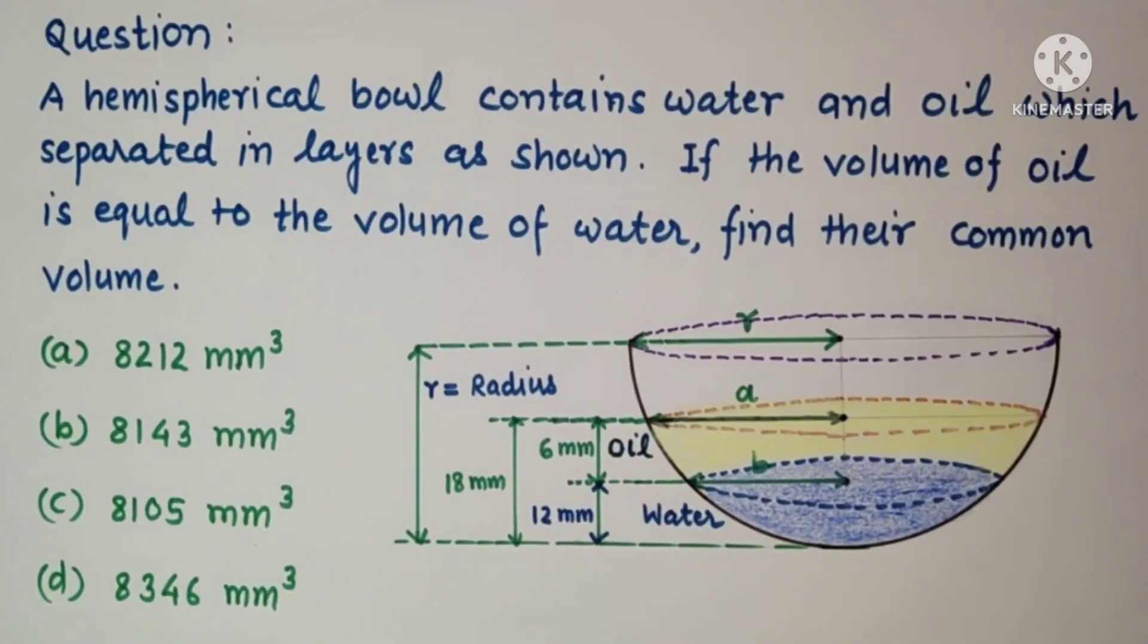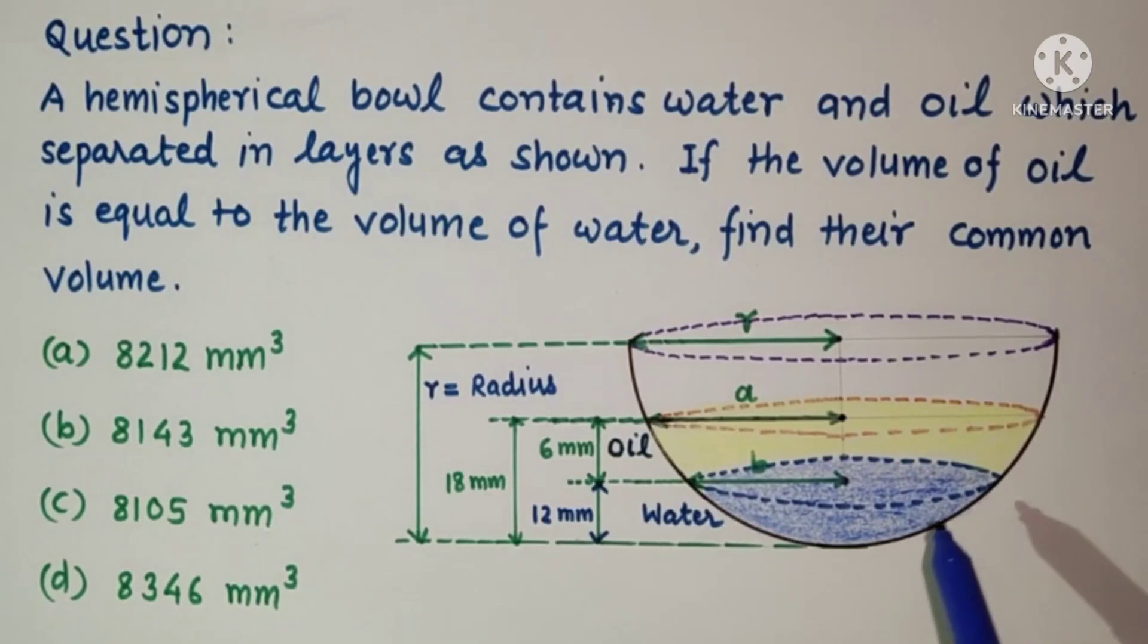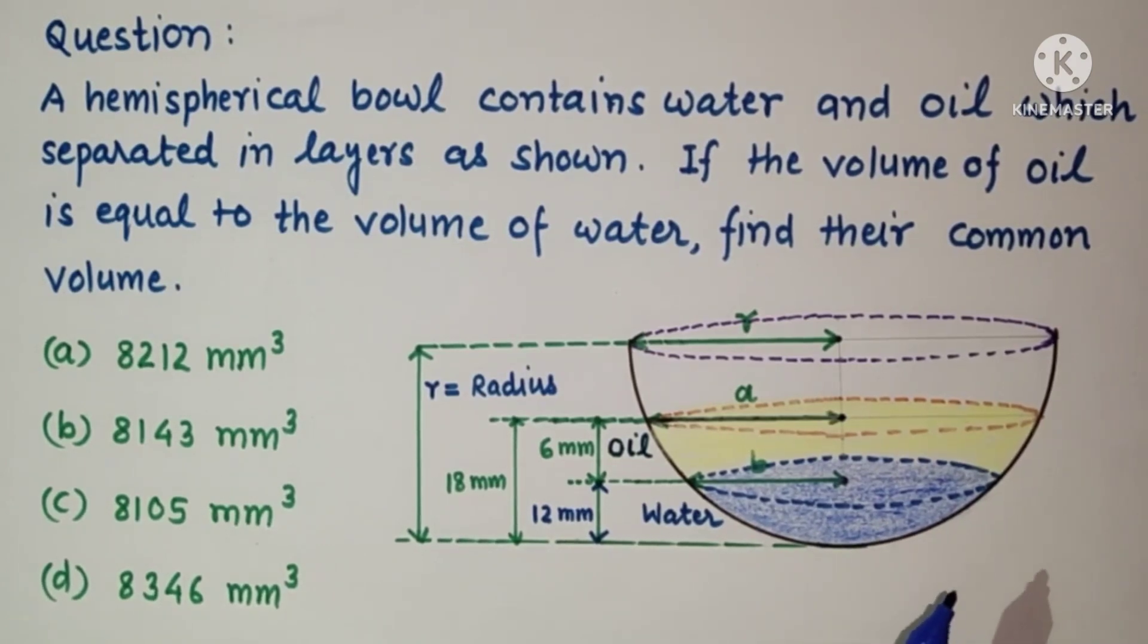Hi everyone, welcome to my channel. In this question we are given a hemispherical bowl which contains water and oil separated in layers as shown in this figure. The volume of oil and the water are both equal. We have to calculate their common volume. We are given that this height is 6 mm, this height is 12 mm, and the whole thing is 18 mm. R is the radius of this hemispherical bowl.